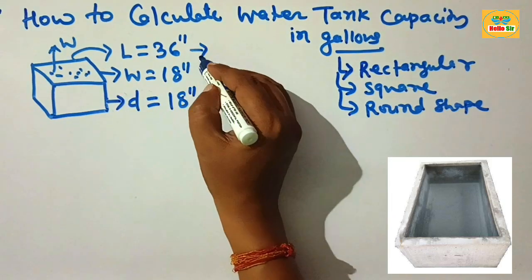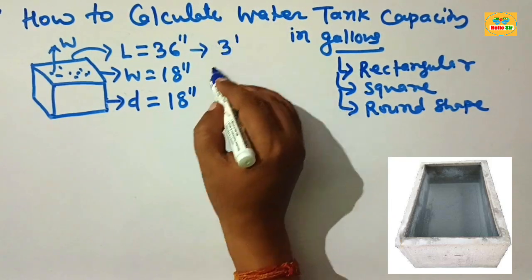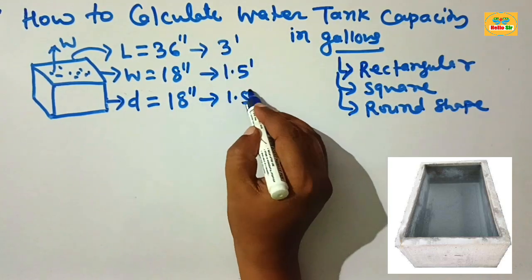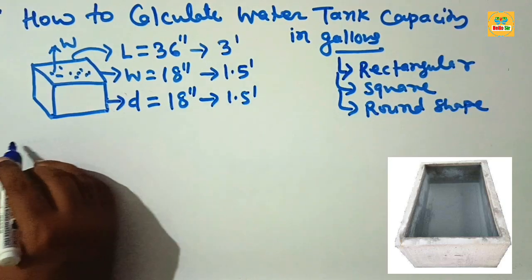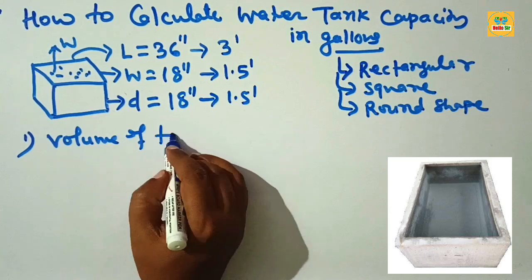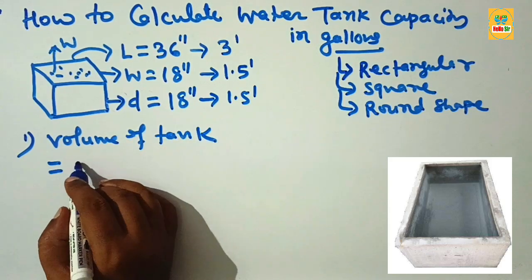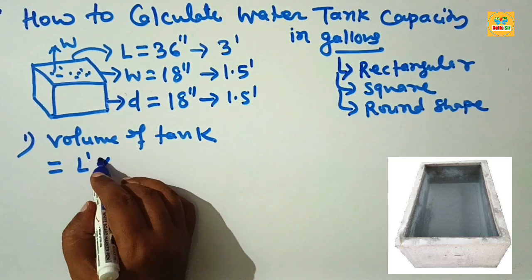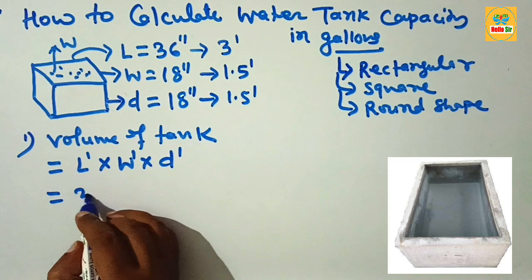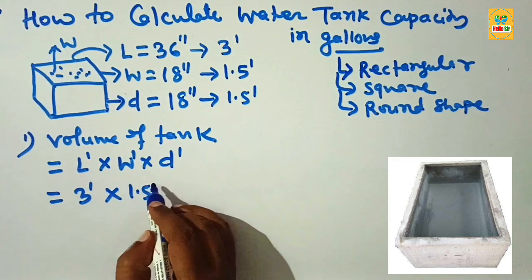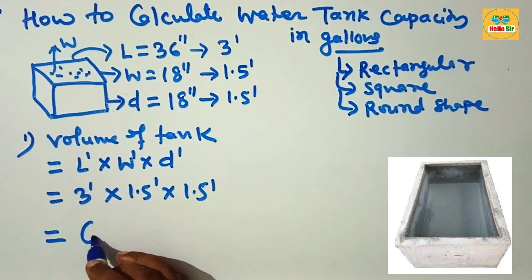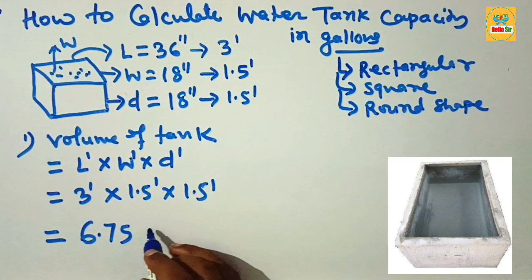These measurements are given in inches, so you have to convert them into feet: 36 inches equals 3 feet, 18 inches equals 1.5 feet, and 18 inches equals 1.5 feet. Now, to calculate the volume of the tank, you multiply the length by the width by the depth: 3 feet multiplied by 1.5 feet multiplied by 1.5 feet.